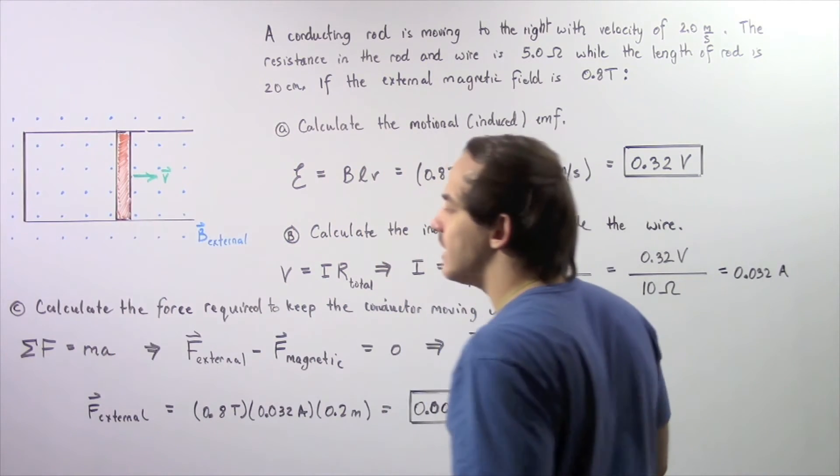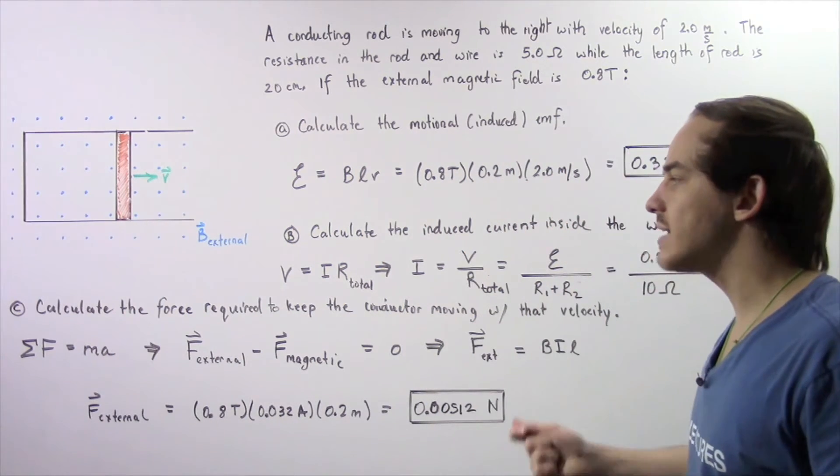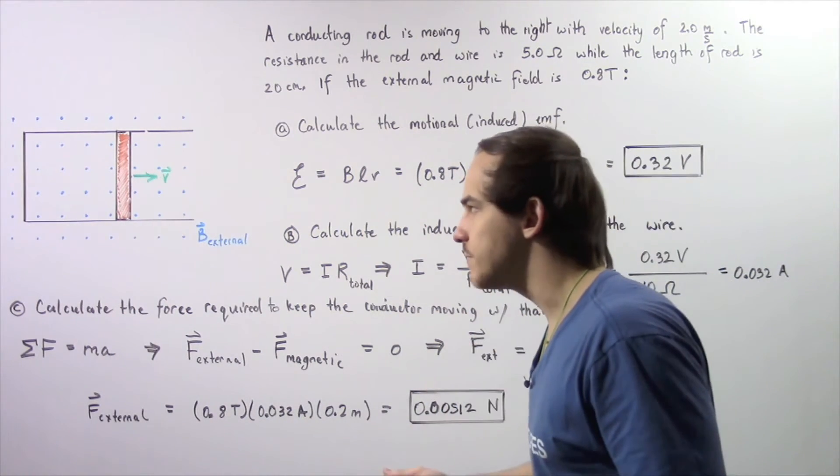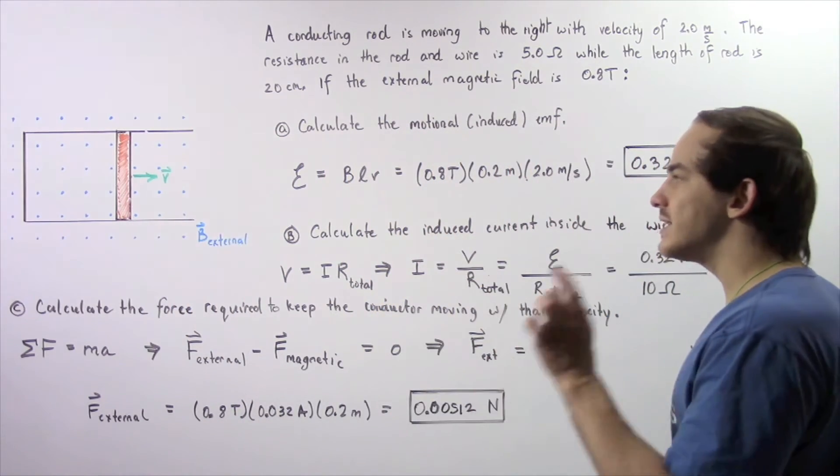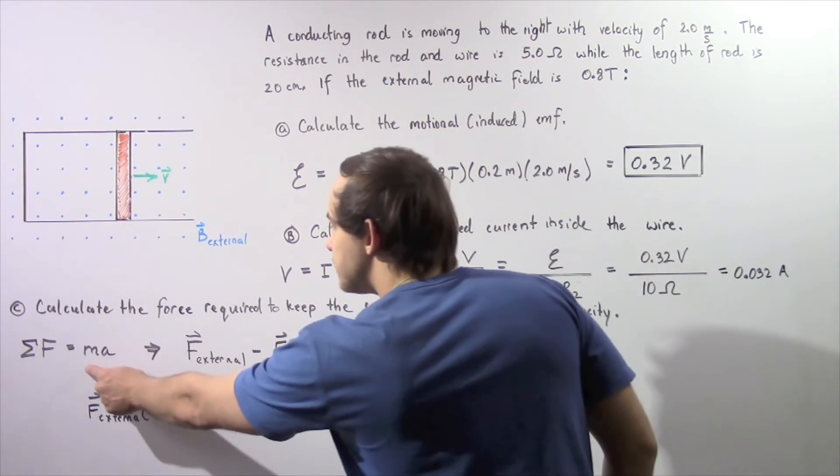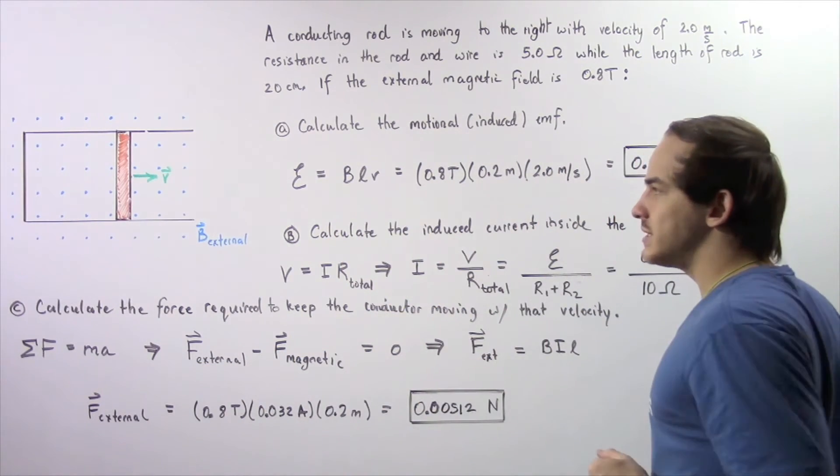Now by Newton's second law of motion, the sum of the forces acting on the rod is equal to the mass times its acceleration. Because the velocity is constant, our object is not accelerating, so M times A equals 0.